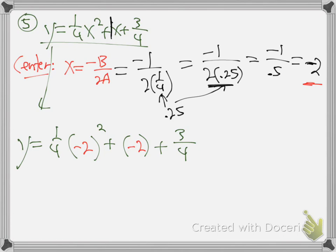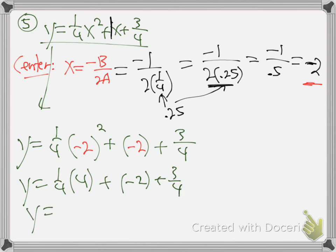Let's go to the graph - we have a graph here. Where's that center? Back 2, down 0.25. So back 2, down just a little bit - it's kind of right there. It's multiple choice on the test, so we just care about the one that looks like it's just a little below 2. And then where's it going from there? When there's a fraction in the front, my little rise over run trick doesn't work.